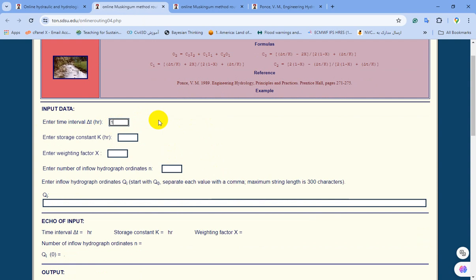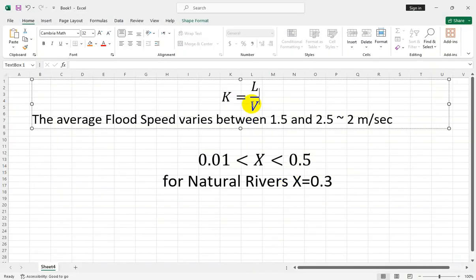If you have other time steps, you can use different time intervals. For storage constant K, the unit is hours. As I mentioned, you can use this simple formula for estimation of K for data-limited or ungauged catchments. However, if you have observed data sets, you can easily calibrate this parameter by trial and error methods.